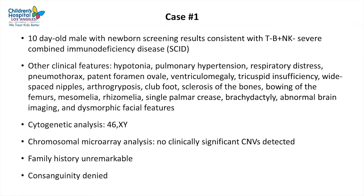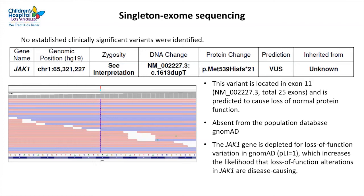The first case is a 10-day-old male with abnormal newborn screening results consistent with T-negative B-positive NK-negative severe combined immunodeficiency disease, with hypotonia, pulmonary, cardiac, and skeletal anomalies, as well as facial dysmorphic features. Classical cytogenetics and chromosomal microarray analysis were both negative. Family history was unremarkable and consanguinity was denied. A singleton exome sequencing analysis was requested, which did not reveal any clinically significant variants; however, a homozygous frameshift variant was detected in the JAK1 gene.